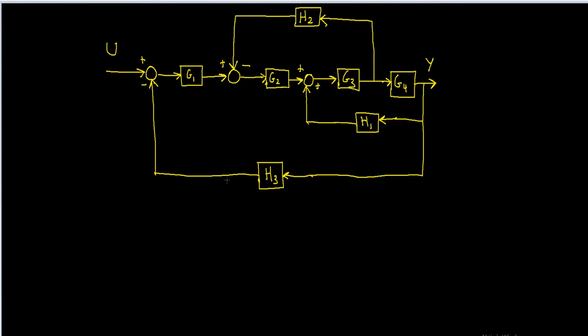Let's say we have the following block diagram, and we want to find the transfer function. That is, we want to find the output divided by the input. How can we do this?